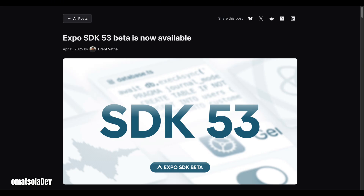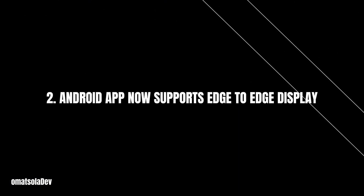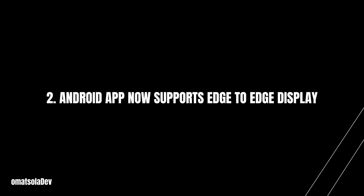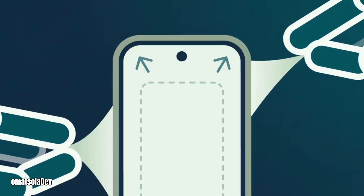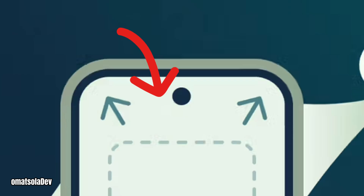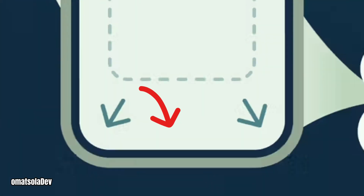If you're not ready for this change, you can still opt out, but it's recommended to embrace the new setup. Android apps now support edge-to-edge displays by default. This means your Android app will automatically use the entire screen space, including the areas behind the status bar at the top and the navigation bar at the bottom, providing a more immersive experience. This is especially important as future Android versions will require this update.